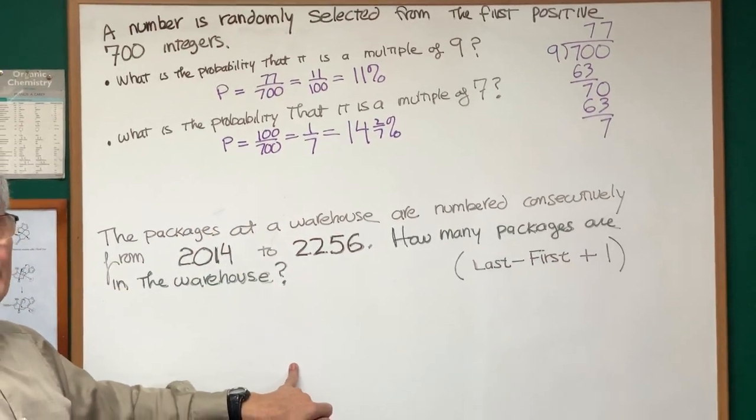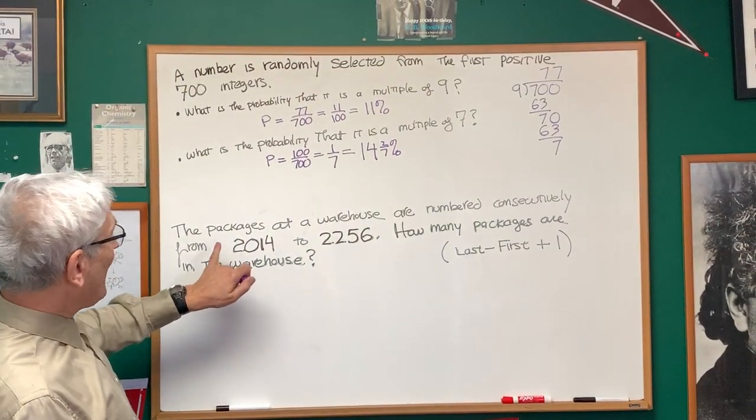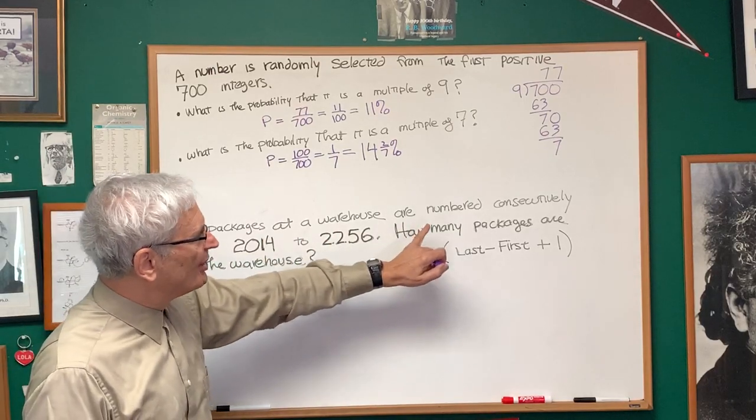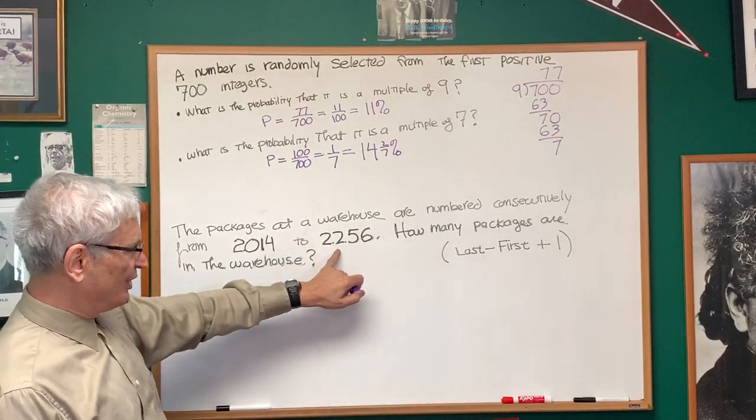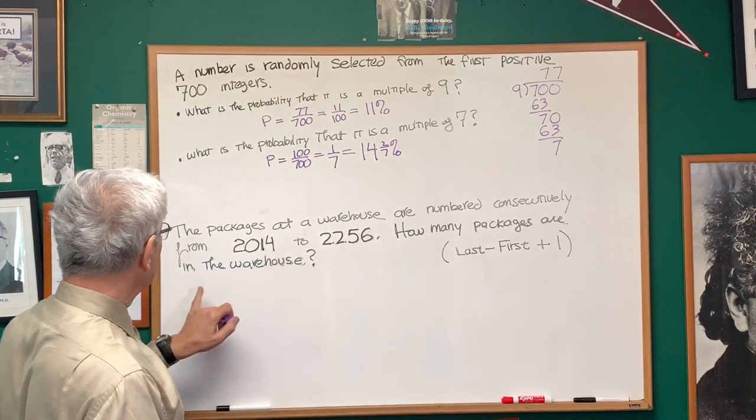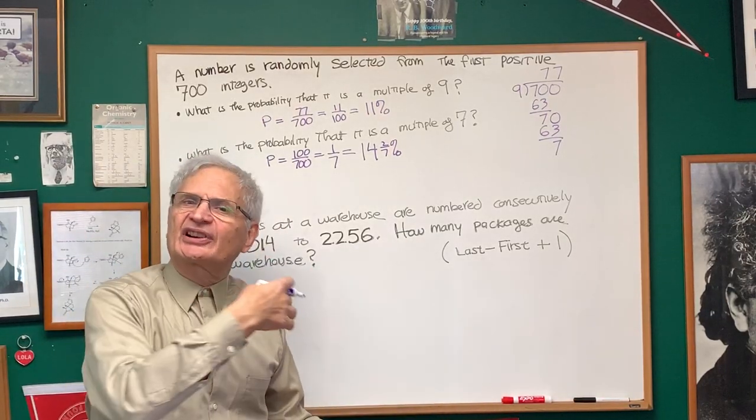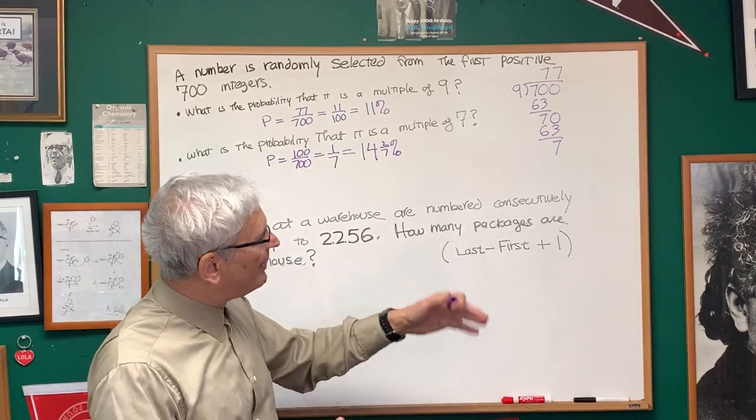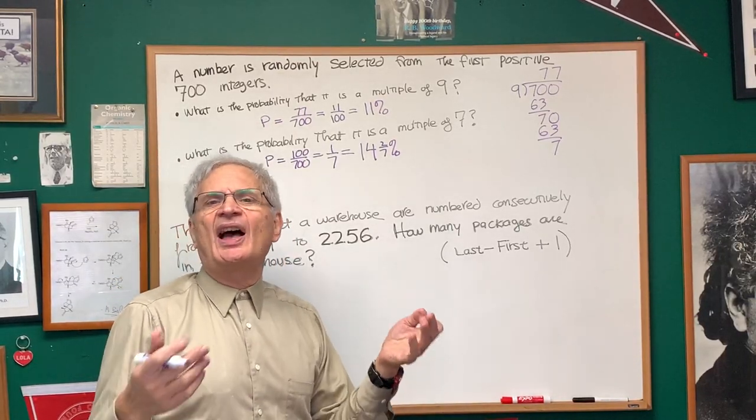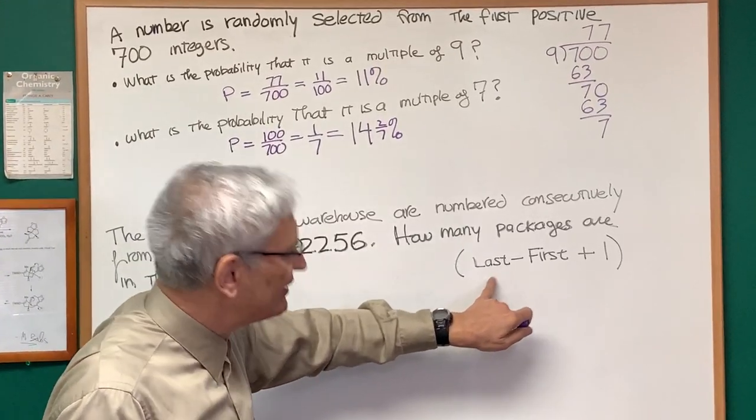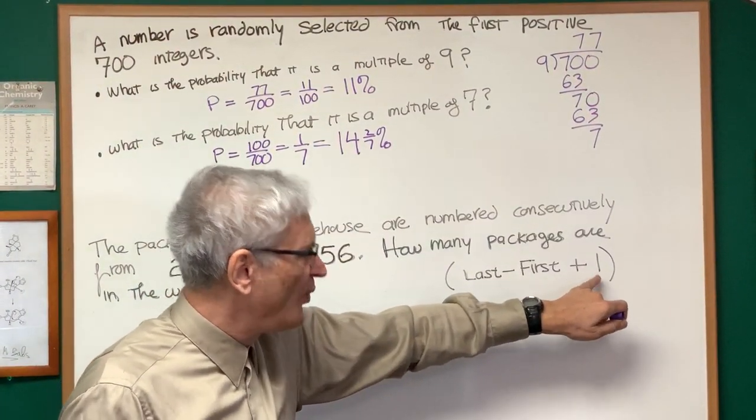Let's go to this next problem, which is very similar. The packages at a warehouse are numbered consecutively from 2014 to 2256. How many packages are in the warehouse? Well, this is sort of a standard formula. If there's a consecutive sequence of numbers, there's a formula that will tell you how many numbers there are in that sequence. It's the last minus the first plus 1.